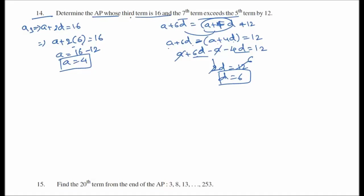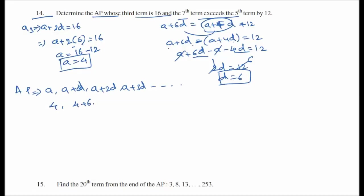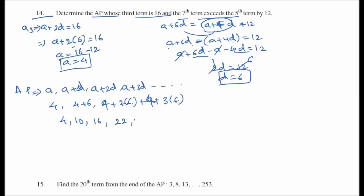So the AP series is: a, a+d, a+2d, a+3d... With a equals 4 and d equals 6: 4, 10, 16, 22. That is the required series.